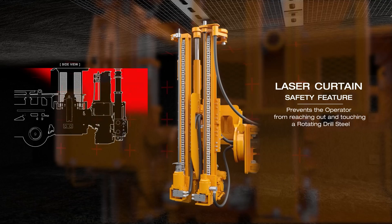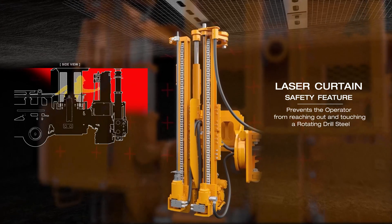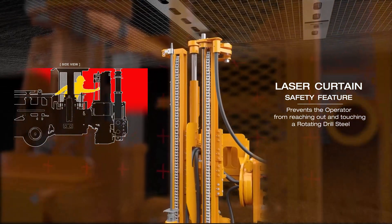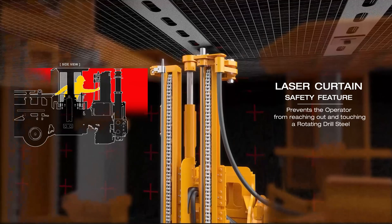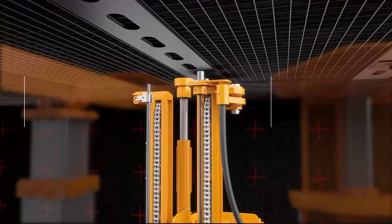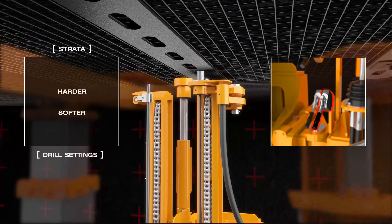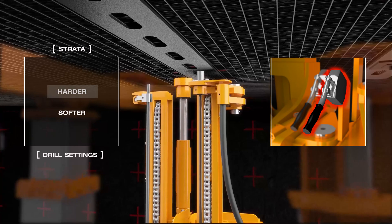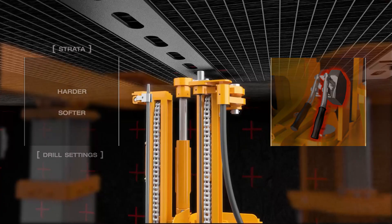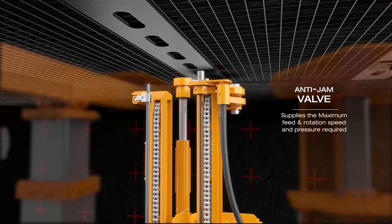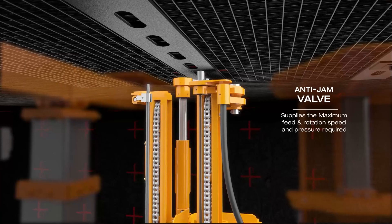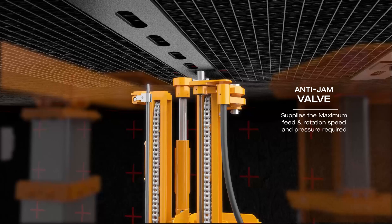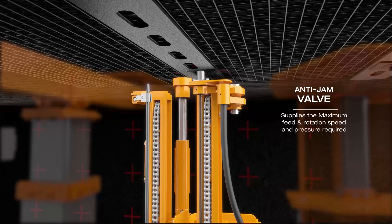A laser curtain safety feature prevents the operator from reaching out and touching a rotating drill steel. A key feature is the option for the operator to switch between drill settings for harder and softer strata. The boom also includes an anti-jam valve, which supplies the maximum feed and rotation speed and pressure required to drill the hole.